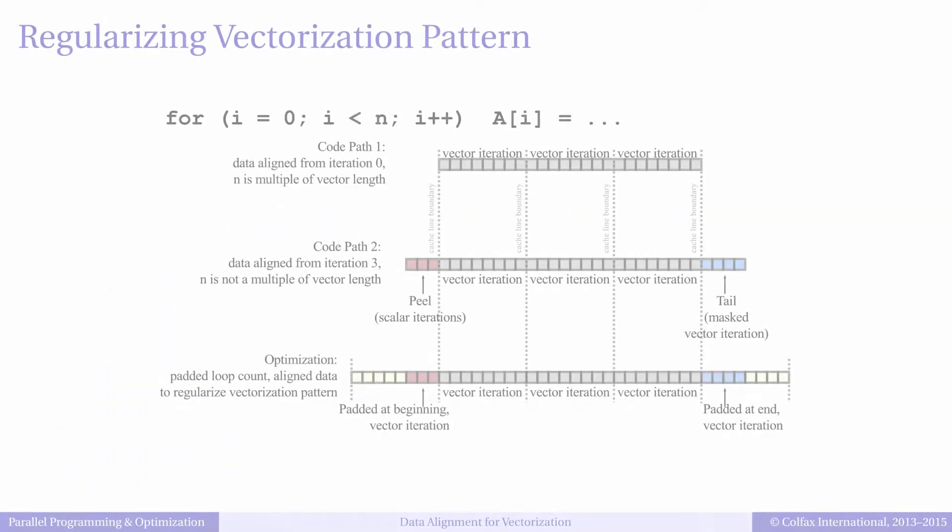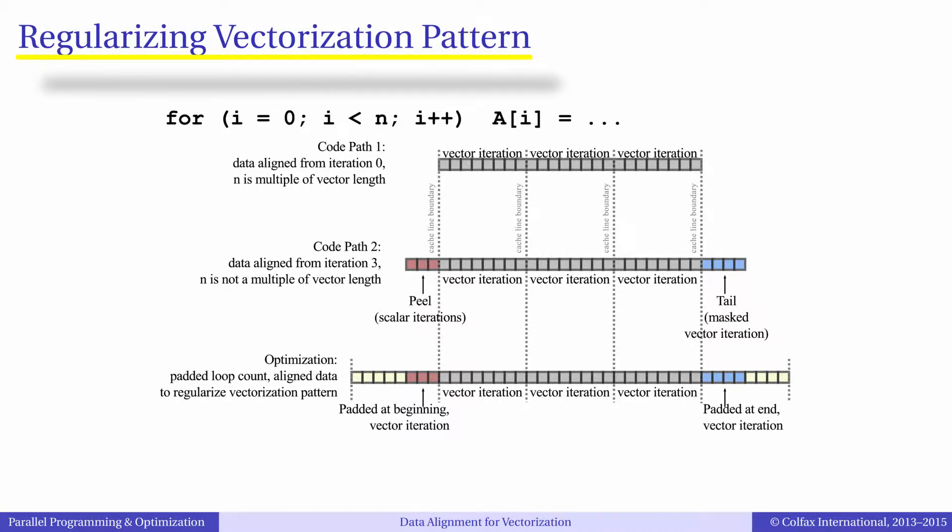To understand what it means to regularize vectorization pattern, take a look at this diagram. Suppose you have a loop in i that uses data in array A. Ideally, if this loop is going to be automatically vectorized, you want all iterations to use vector instructions.